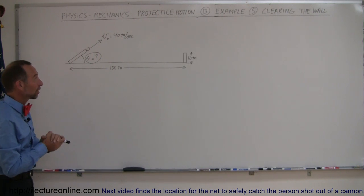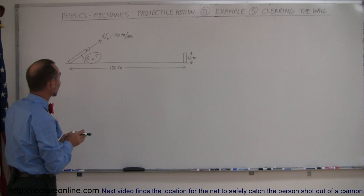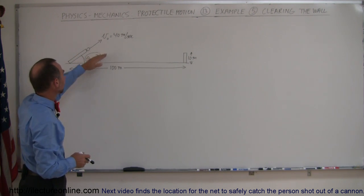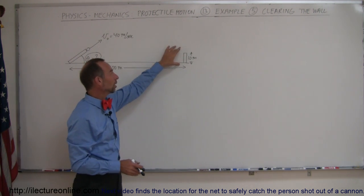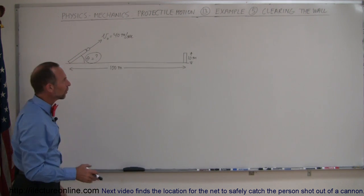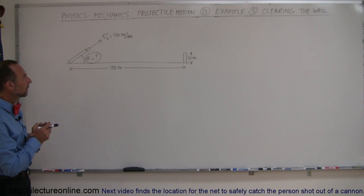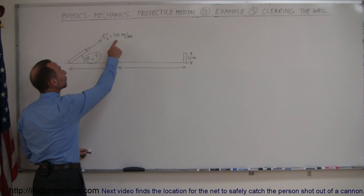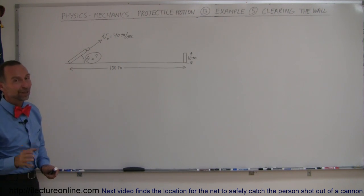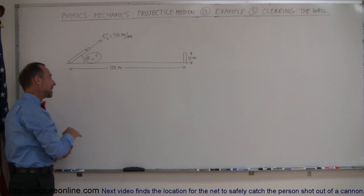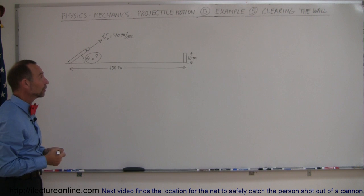Here's another example of how to deal with projectile motion problems. We're going to try to clear a wall with a projectile shot out at 40 meters per second at some unknown angle that you're supposed to find. The wall is 100 meters away and 10 meters tall. What's different here from the earlier problem is that you were given the angle before; now you're given the velocity and you must find the angle — a very different problem.